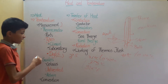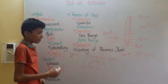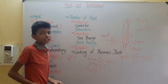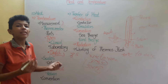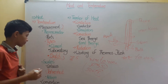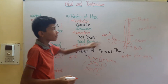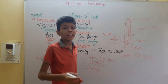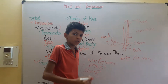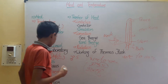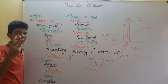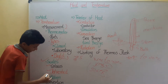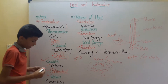Now we see degrees Celsius and Fahrenheit. These are called scales. The marking is represented by scales. There are basically three types of scales: Celsius, Fahrenheit, and Kelvin.